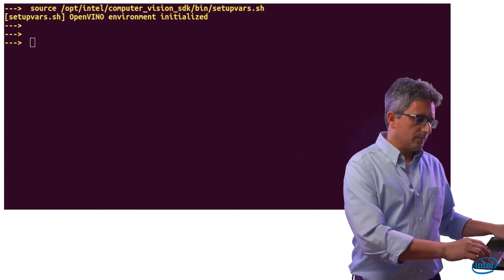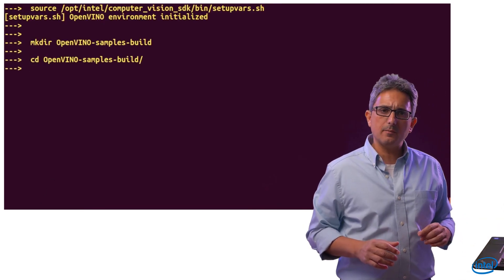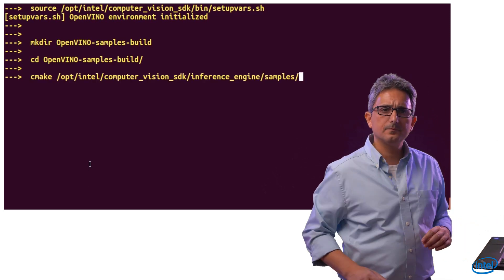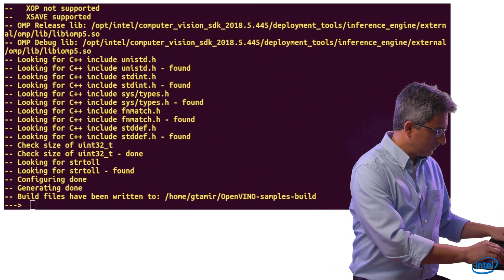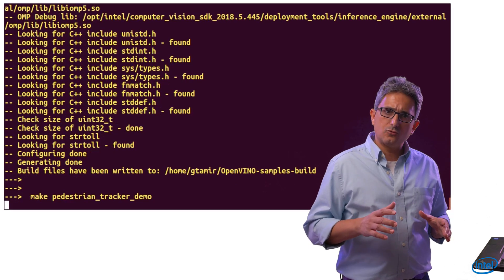Now let's activate OpenVINO environment. I will open a new directory and build the OpenVINO sample here. CMake. And I will make only the sample I need: Pedestrian-Tracker-Demo.